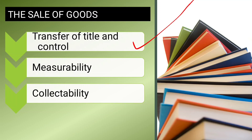The second condition is measurability — the selling price or consideration must be measurable and fixed. The third condition is collectability — in the case of credit sales, the buyer will pay cash at a future time, so the seller must be certain of receiving that cash.